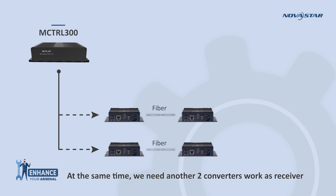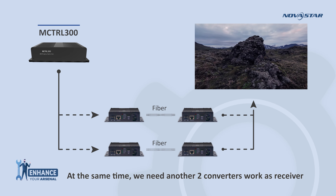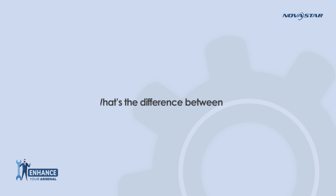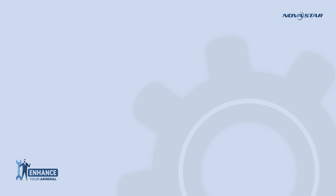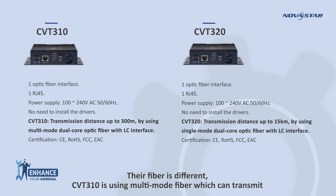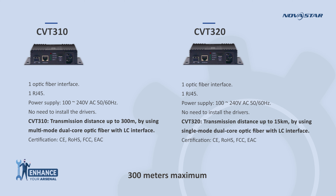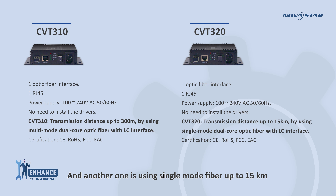At the same time, we need another two converters working as receivers. What's the difference between CVT310 and CVT320? The fiber type is different. CVT310 uses multi-mode fiber, which can transmit up to 300 meters maximum, and the other one uses single-mode fiber, up to 15 kilometers.